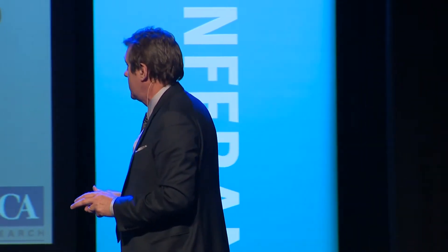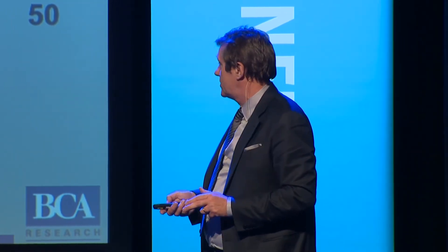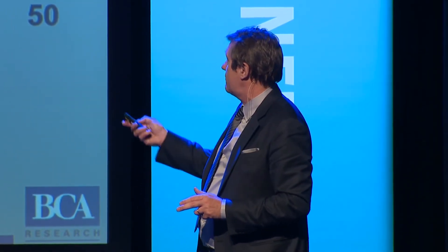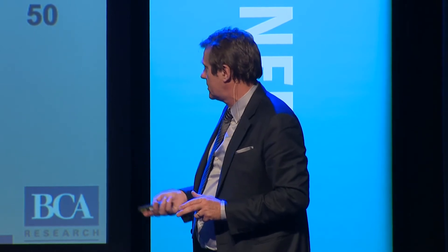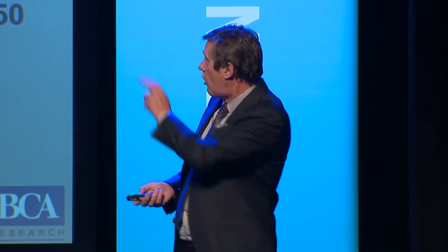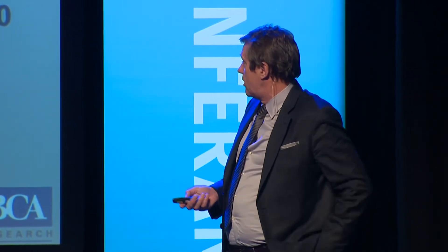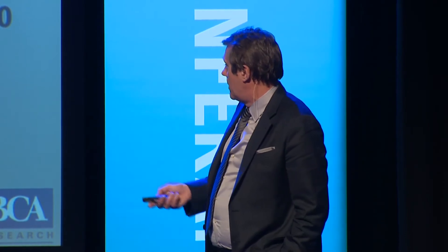Before we start talking about those shorter term time horizons, let's try to frame the outlook for over the next five years. This confusing chart here shows previous secular bear markets in the US over the last century or so. There are four major bear markets. What I'd like you to focus in on is the blue line, which basically shows where we are now — 12 and a half years into a secular bear market in equities.